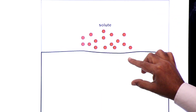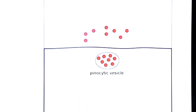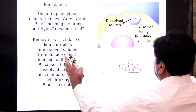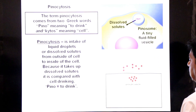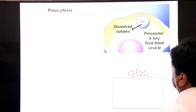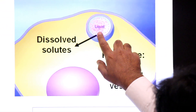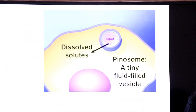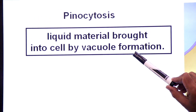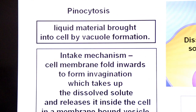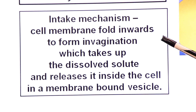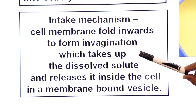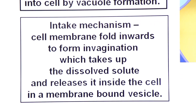Uptake of liquid in bulk — large quantity — along with dissolved solutes is called pinocytosis. The mechanism of pinocytosis: the cell membrane folds inward — invaginates — to form an invagination which takes up dissolved solutes and releases them inside the cell in a membrane-bound vesicle. Liquid material is brought into the cell by vesicle formation.